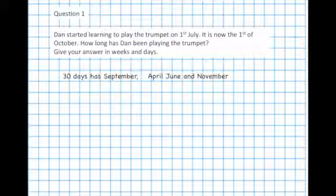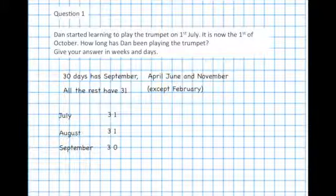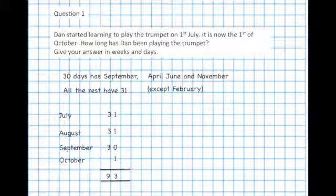30 days in September, April, June and November. All the rest have 31 except February. So July was 31 days. August 31 days. September 30 days. October just the one day because it's the 1st of October. Then we need to add them up. 93 days altogether, but we want the answer in weeks and days.